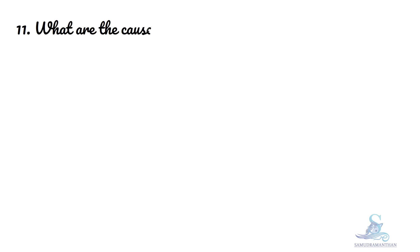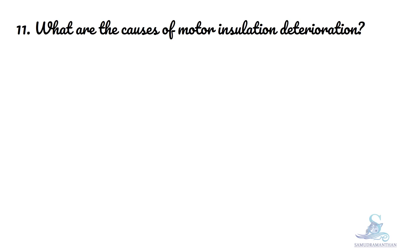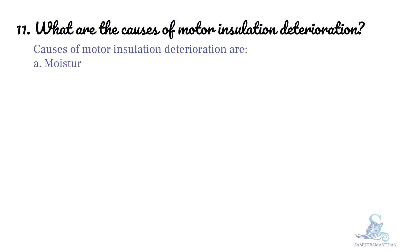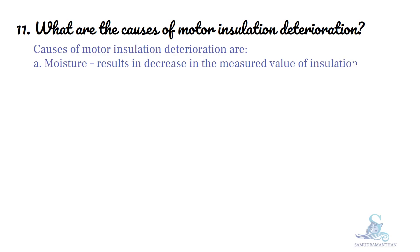What are the causes of motor insulation deterioration? Causes of motor insulation deterioration are: Moisture, which results in a decrease in the measured value of insulation resistance; and Dust and dirt deposits.